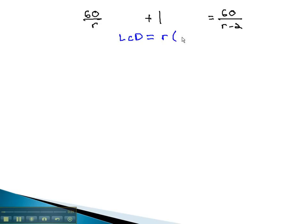We know that r times r minus 2 is our common denominator, and so we will multiply each factor by r, r minus 2.